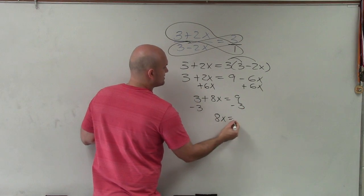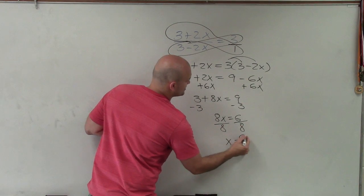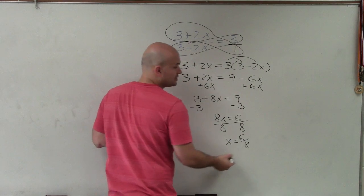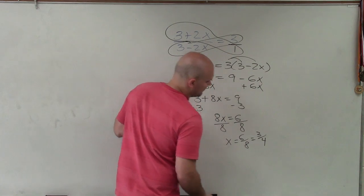And I have 8x equals 6, divide by 8, divide by 8, x equals 6 over 8, which we can reduce by dividing out a 2 on the top and the bottom, which is going to become 3 fourths.